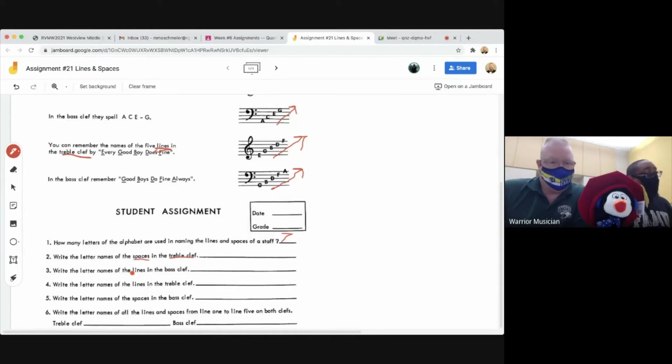Number three: write the letter names of the lines in the bass clef. So lines and bass clef, that's what you're looking for to answer number three. Number four: write the letter names of the lines in the treble clef. And then number five: write the letter names of the spaces in the bass clef. So those are the key words that are going to help you guys answer questions two through five.